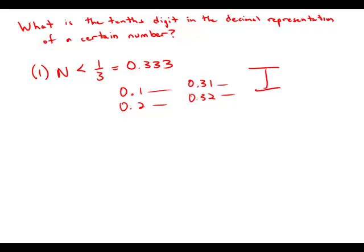Now forget about statement number one entirely. Statement number two tells us that the number is greater than one-quarter. Well, one-quarter as a decimal is 0.25.